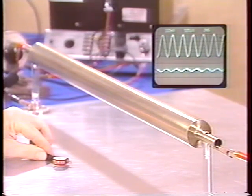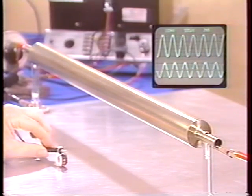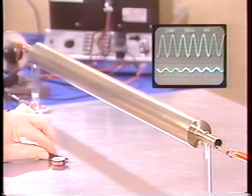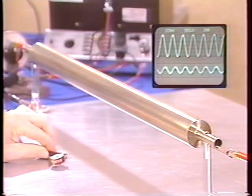At this lower frequency, we see that the ratio of normal component to tangential component is larger than at 3 kilohertz. At 300 hertz, here's the tangential component and here's the normal component.